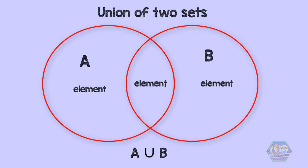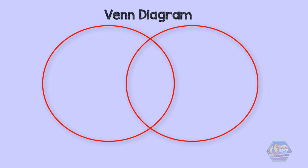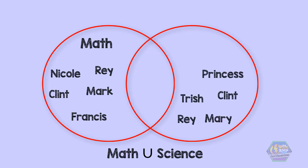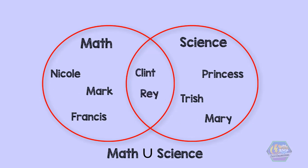As for the example, a Venn diagram is very convenient to use because it shows lots of information. We can see that Ray, Mark, Clint, Nicole, and Francis are in the math set, while Princess, Trish, Clint, Ray, and Mary are in the science set. And here is the clever thing: we can see that Clint and Ray are in both sets. All of that in one small diagram. Amazing, right?